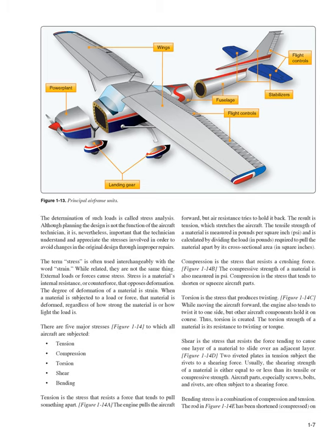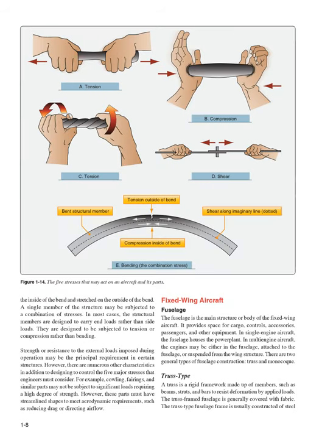While moving the aircraft forward, the engine also tends to twist it to one side, but other aircraft components hold it on course, thus creating torsion. The torsion strength of a material is its resistance to twisting or torque. Shear is the stress that resists the force tending to cause one layer of a material to slide over an adjacent layer. Two riveted plates in tension subject the rivets to a shearing force. Usually, the shearing strength of a material is either equal to or less than its tensile or compressive strength. Aircraft parts, especially screws, bolts, and rivets, are often subject to a shearing force. Bending stress is a combination of compression and tension — a rod is shortened (compressed) on the inside of the bend and stretched on the outside. A single member of the structure may be subjected to a combination of stresses. In most cases, structural members are designed to carry end loads rather than side loads — to be subjected to tension or compression rather than bending.